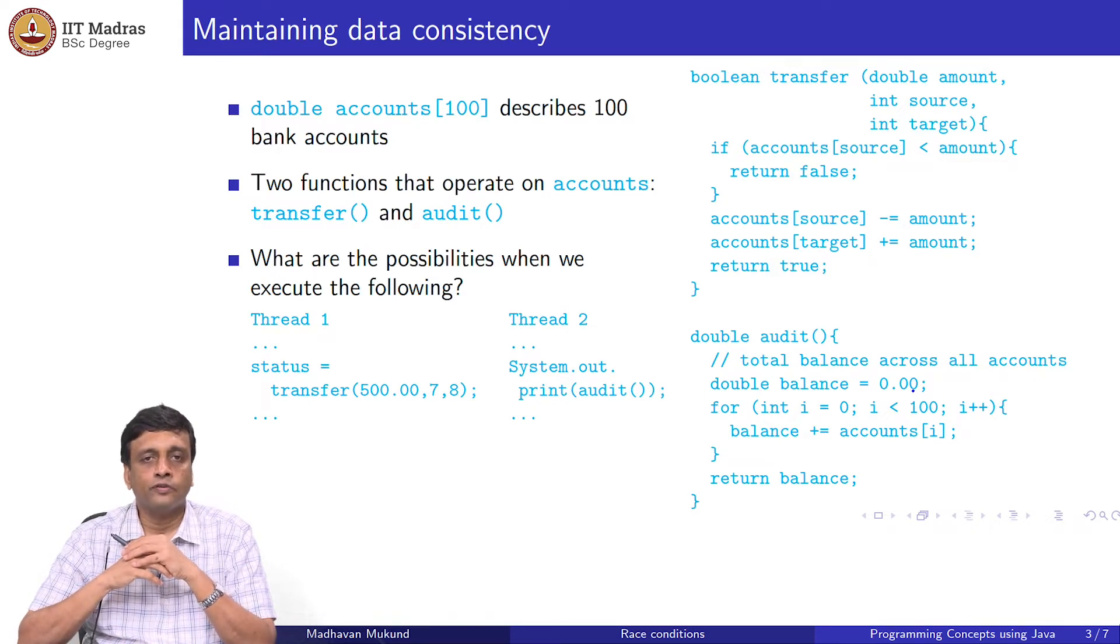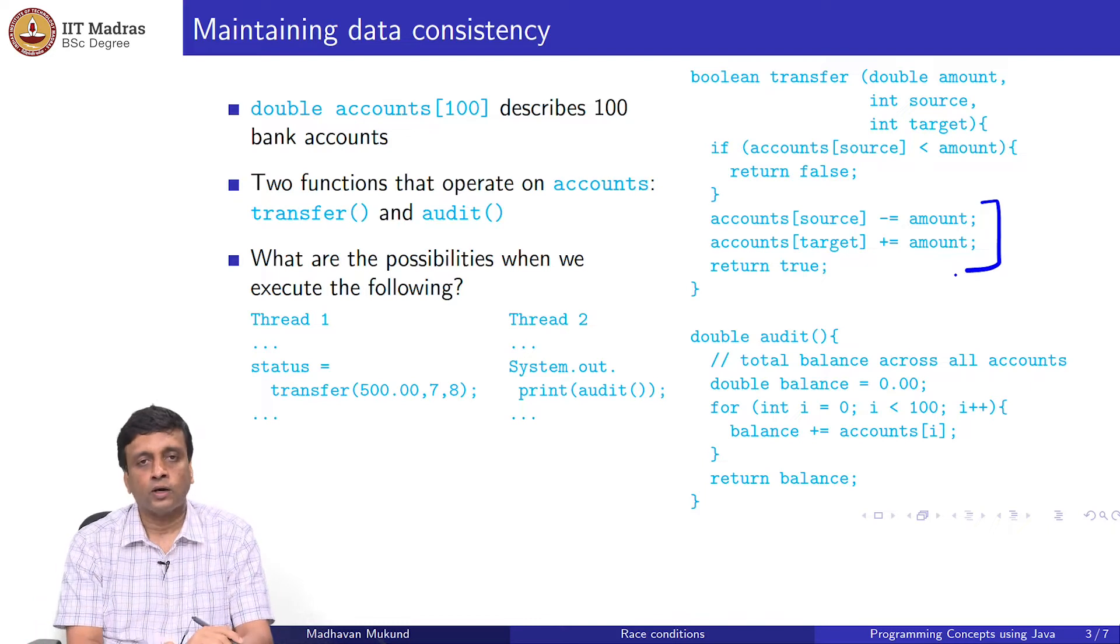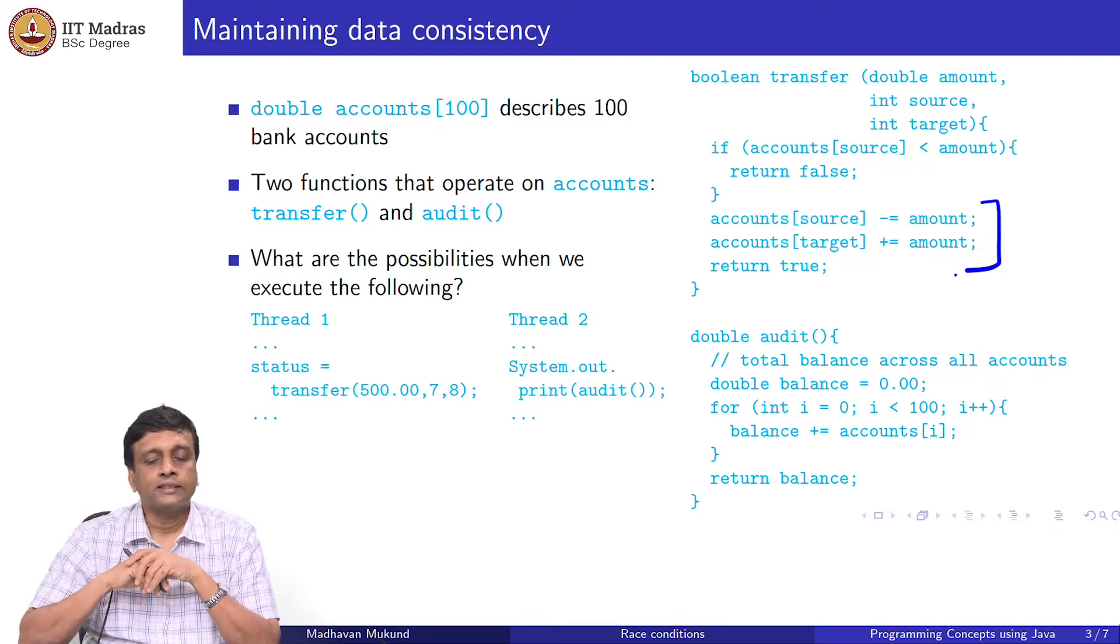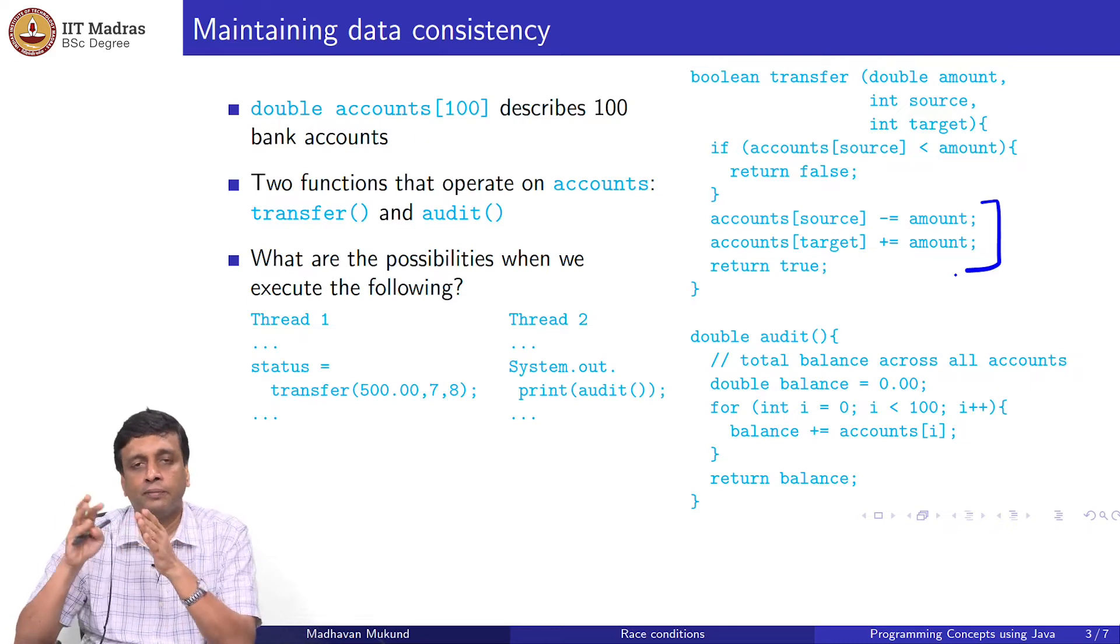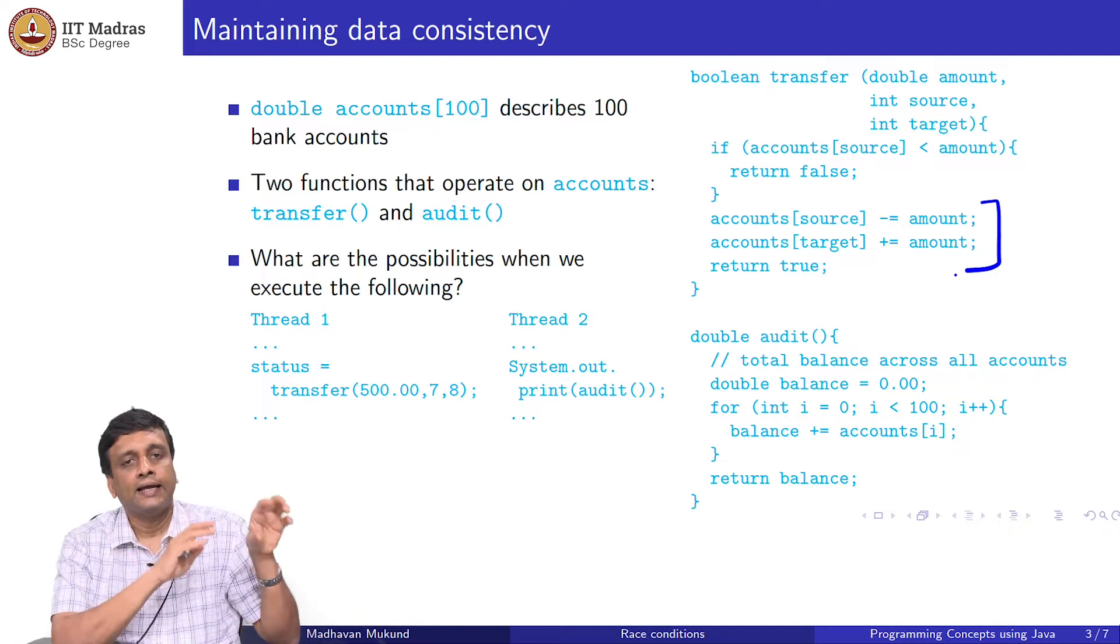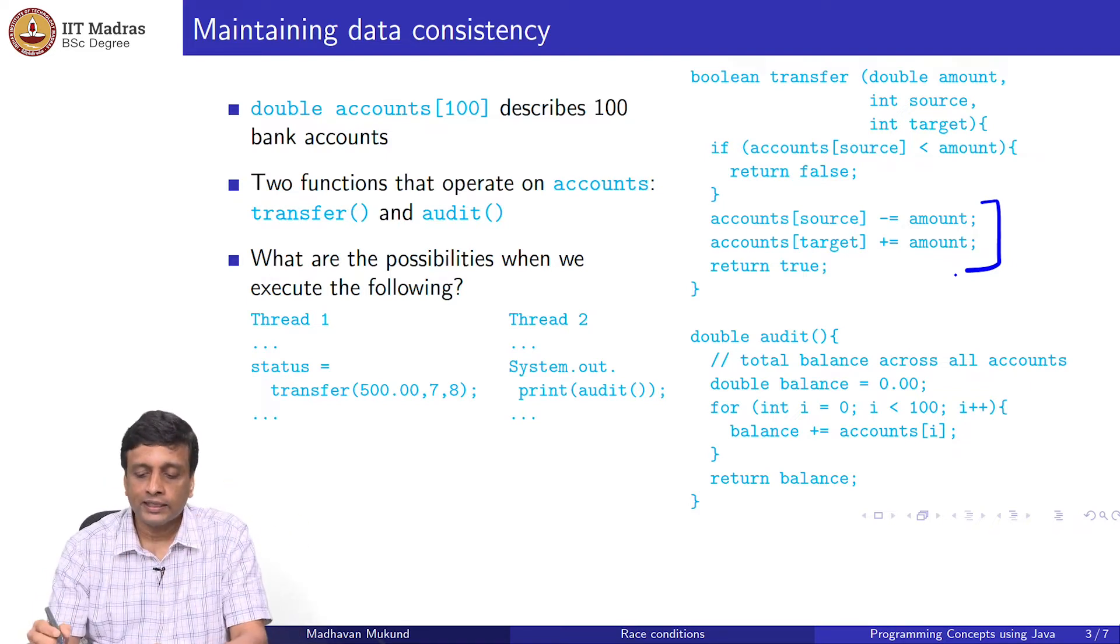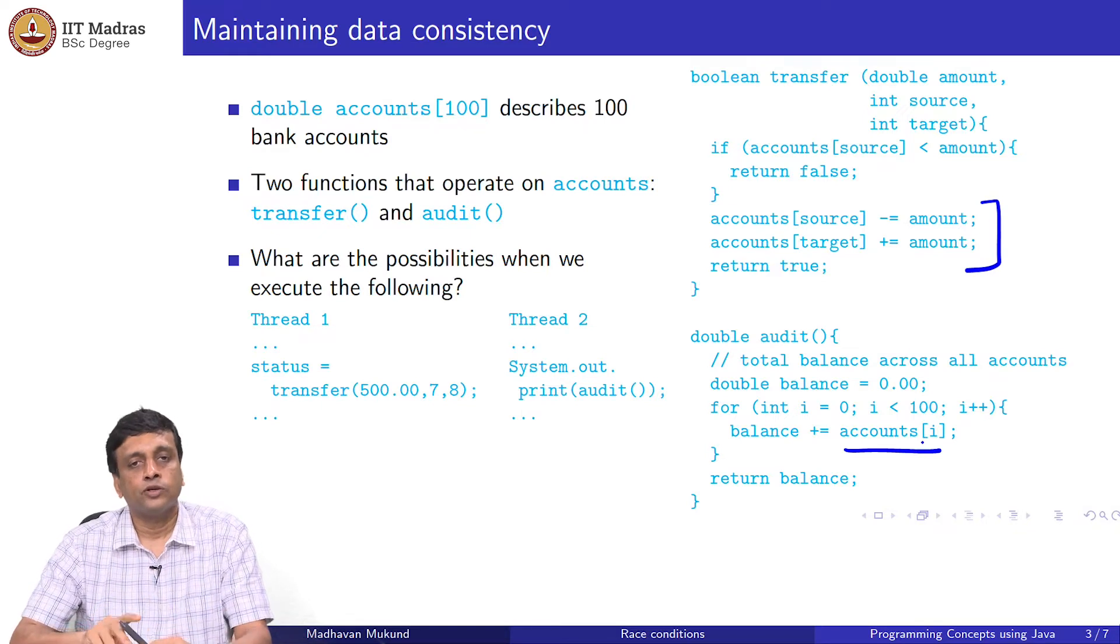Now we are talking about concurrency. The question is what happens if I try to execute these two things in parallel. One of them is updating accounts—transfer is updating this by transferring money from one to another. The other one is not changing anything, it is merely looking up the values of the accounts.